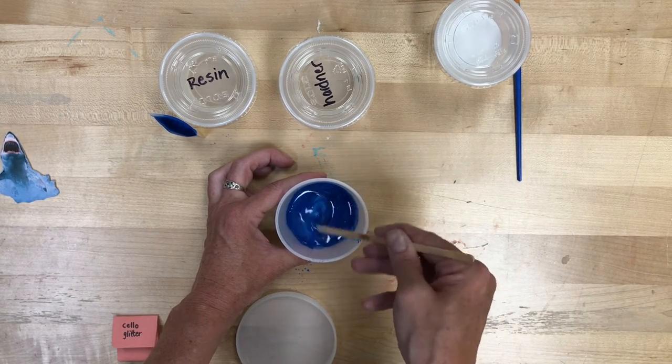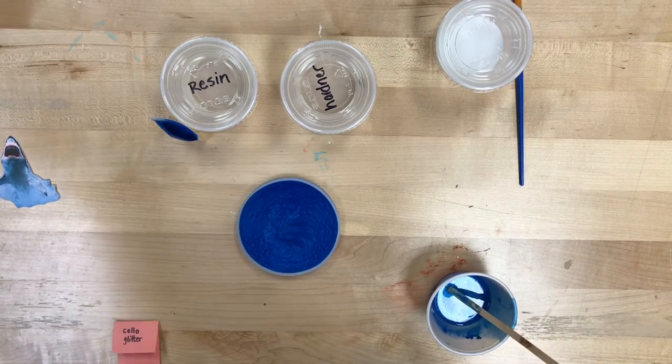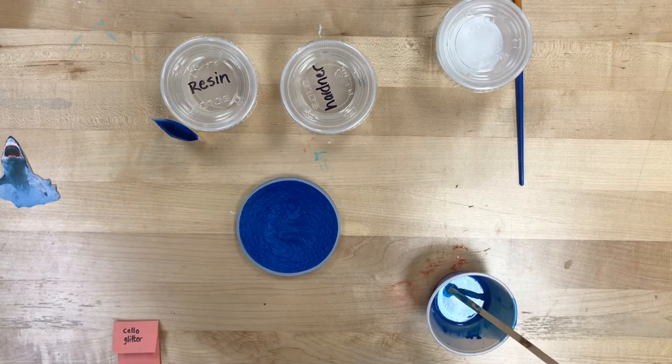We want it to look molten and kind of like ocean water. Once you get it to that point, we are going to pour a thin layer into our coaster mold. That's going to look like this, and we're going to let it sit for 12 hours.